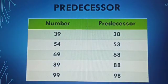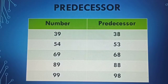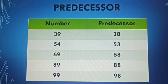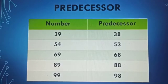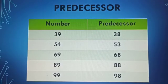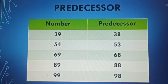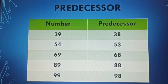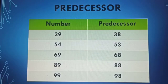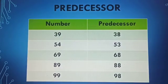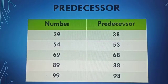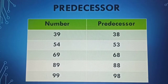Let us discuss some examples. For example, 38 is the predecessor of 39. 53 is the predecessor of 54. 68 is the predecessor of 69. 88 is the predecessor of 89. 98 is the predecessor of 99.